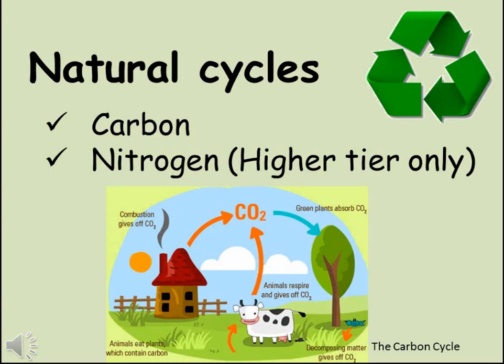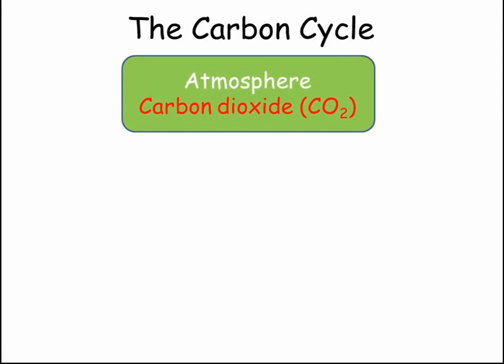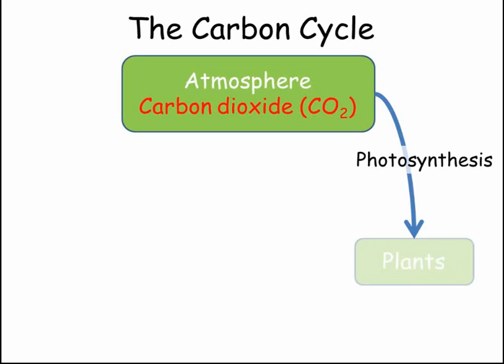Let's begin by looking at carbon. Carbon is stored in the atmosphere in the form of carbon dioxide. The only process that removes carbon from the atmosphere is photosynthesis, done by all plants, which produces larger carbon-based molecules that a plant uses for energy through respiration and growth.